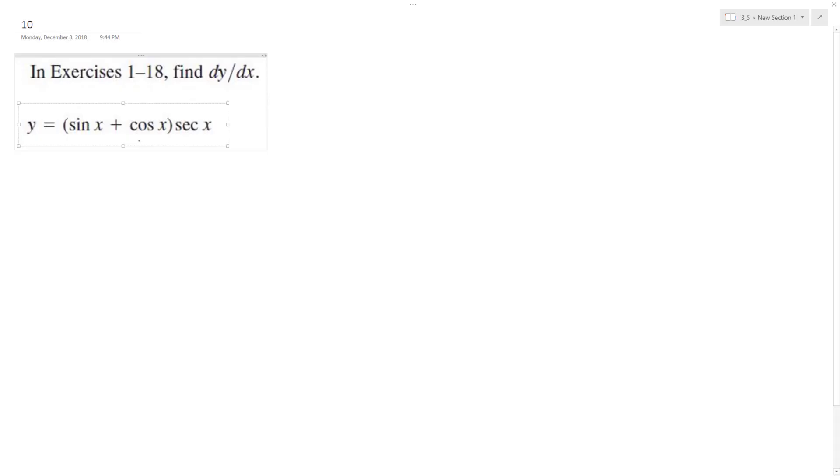All right, so we want to solve the following problem. First thing to do here is recognize secant x is the same thing as 1 over cosine x. So go ahead and distribute that.